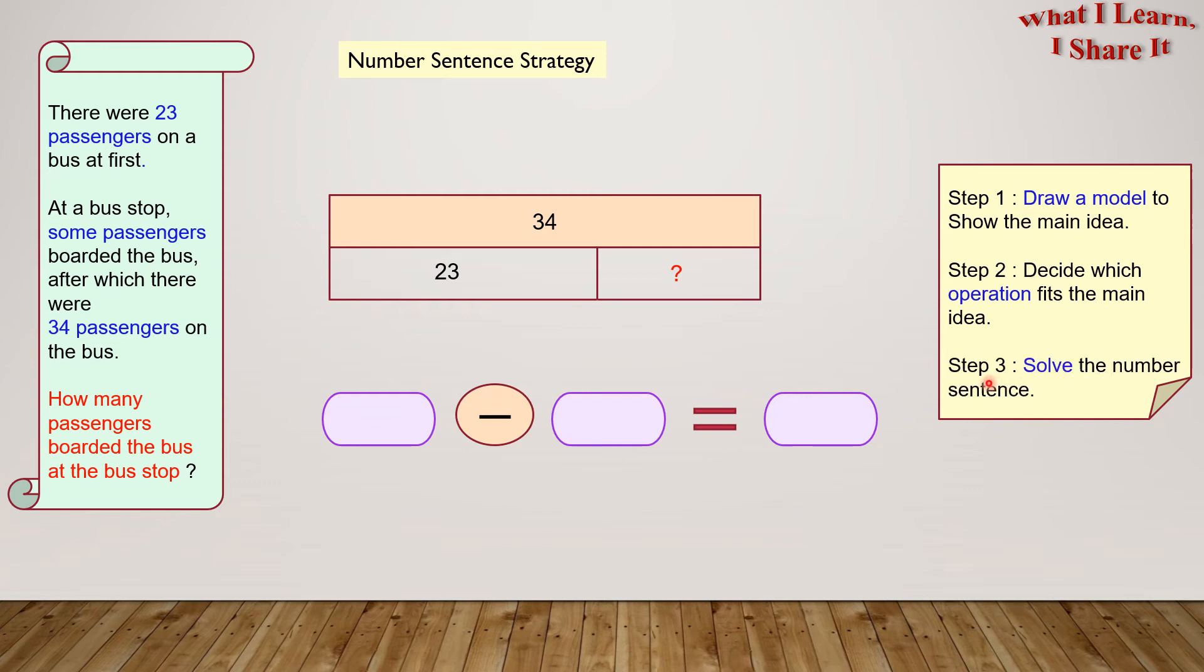Step 3. Solve the number sentence. We can write 34, which came from here, minus 23, which came from here, equals 11!